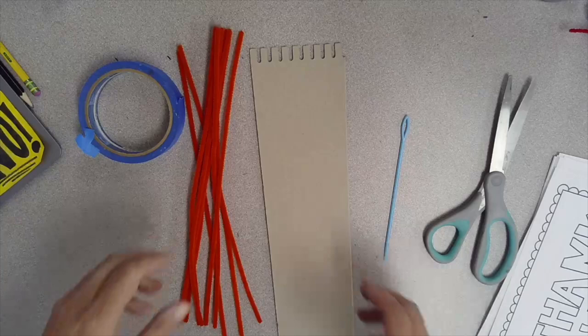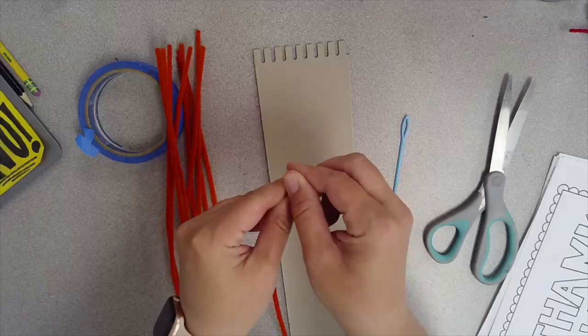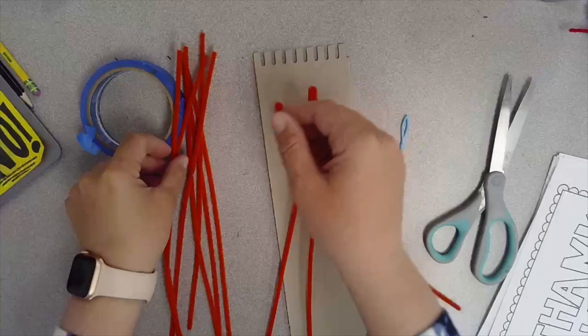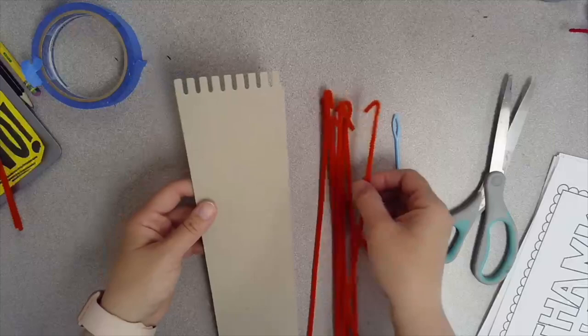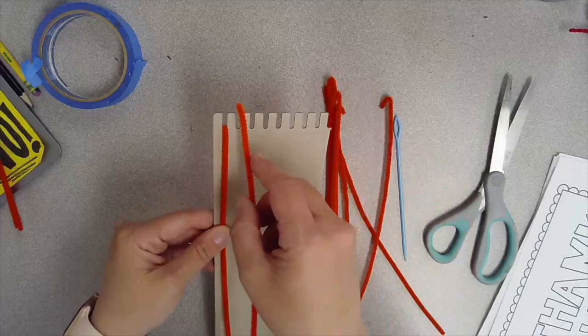We're first going to put the pipe cleaners on the loom. Bend them to make a hook at the top so that way we could put it at the top of our loom. Once you've made a hook out of each one, take and put one in each of the notches on the loom. Make sure they're going to attach without falling off.